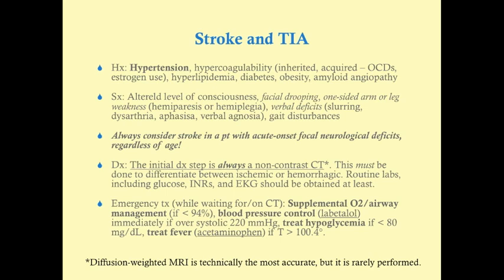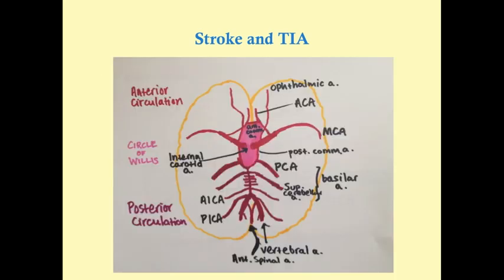Fever is defined as 100.4°F — you can give acetaminophen either orally or rectally if the patient is obtunded. As a review of the circulation, most strokes occur in the ACA or the MCA, giving rise to either upper or lower hemiparesis or hemiplegia. There are many arteries and thus many different syndromes. You need the CT first to confirm the lesion location, though you can usually predict it clinically.